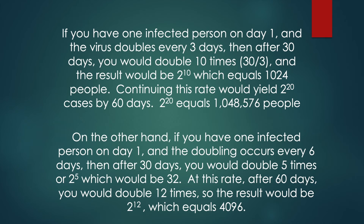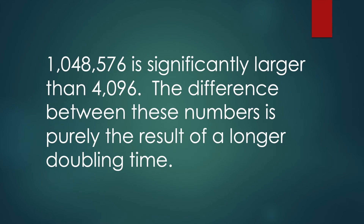On the other hand, if you have one infected person on day one and the doubling occurs every six days instead of every three days, then after 30 days you would double five times — 2 to the 5th power — which would be 32. At this rate, after 60 days you would double 12 times, so 2 to the 12th power, which equals 4,096. That's quite a different number: 1,048,576 is significantly larger than 4,096. The difference is purely the result of a longer doubling time.